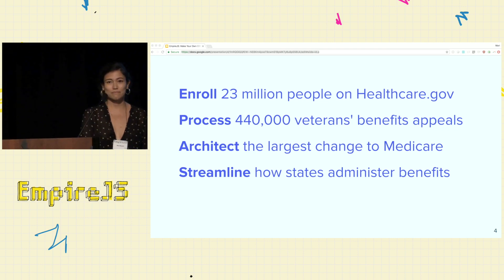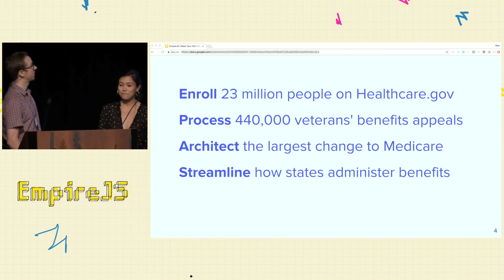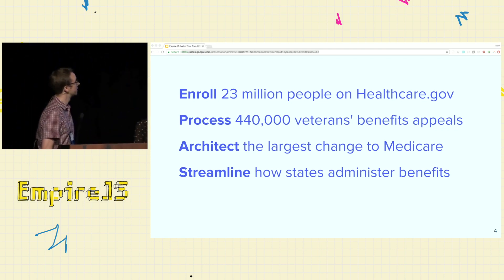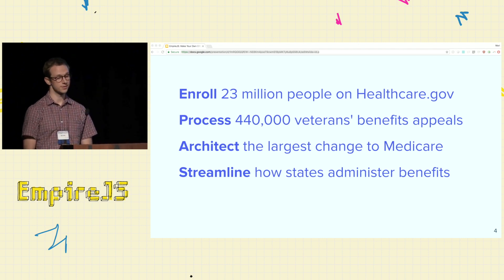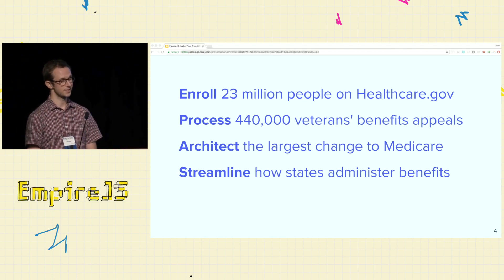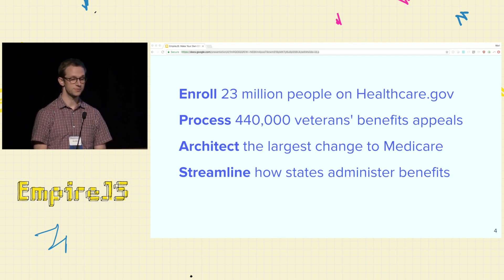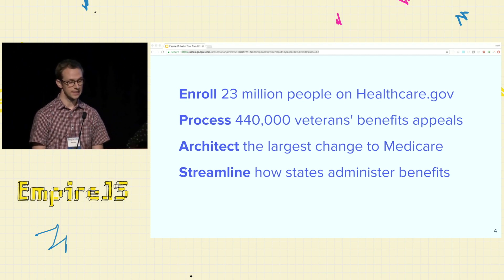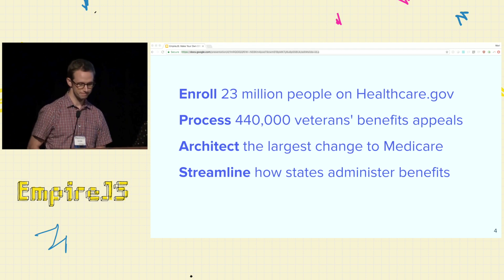This is what we work on at Nava. We've enrolled 23 million people on healthcare.gov. We've processed 440,000 veterans' benefits appeals. We've architected the largest change in Medicare since its founding, and we've streamlined how states administer benefits. And today, we're going to talk about our work on Medicare.